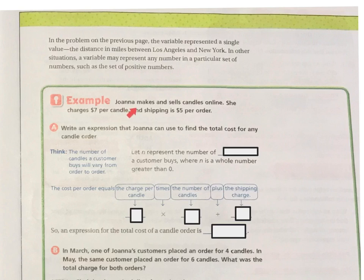Example: Joanna makes and sells candles online. She charges $7 per candle and shipping is $5 per order. Write an expression that Joanna can use to find the total cost of any candle order. So think, the number of candles a customer buys will vary from order to order. So let N represent the number of candles a customer buys, where N is a whole number that is greater than 0.